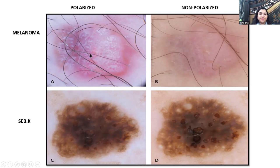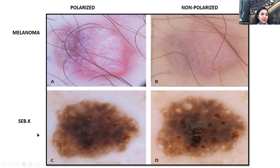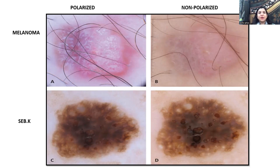In melanoma, the polarized mode is important, but there are structures more visible in non-polarized mode — for example, the famous blue-white veil, visible more in non-polarized. In seborrheic keratosis, comedo-like cysts appear in polarized mode, but white milia-like cysts become more prominent in non-polarized mode. I urge you to see a lesion with both modes.